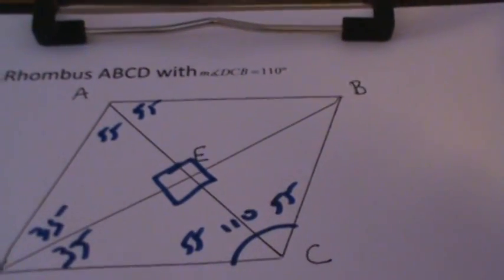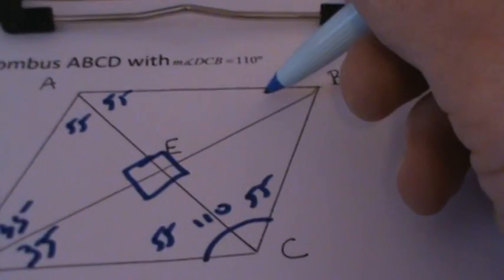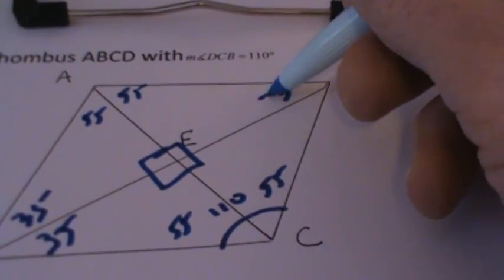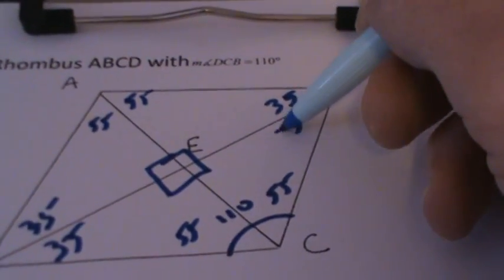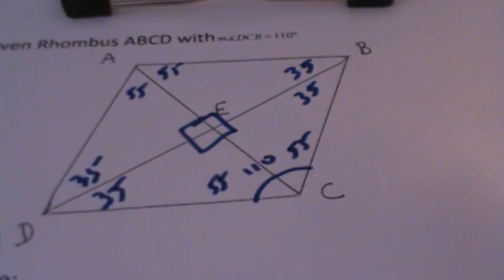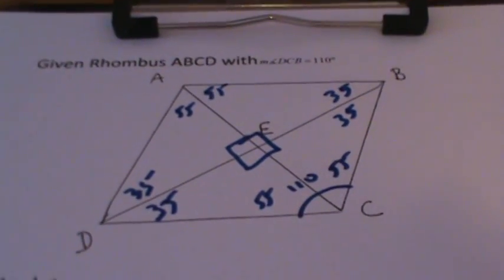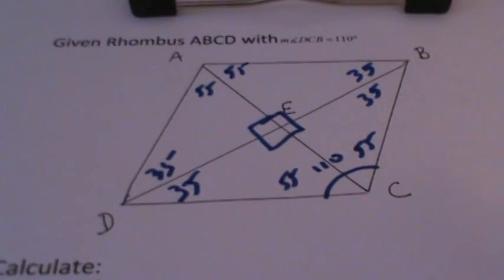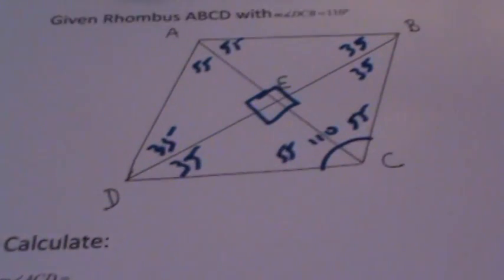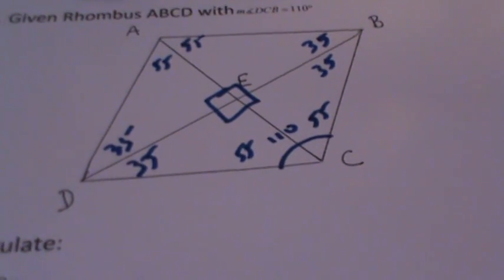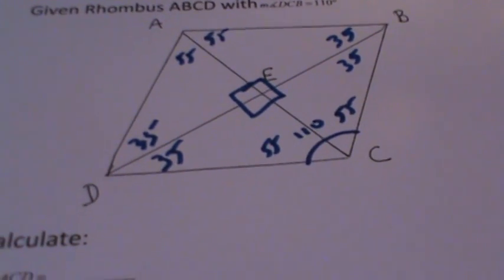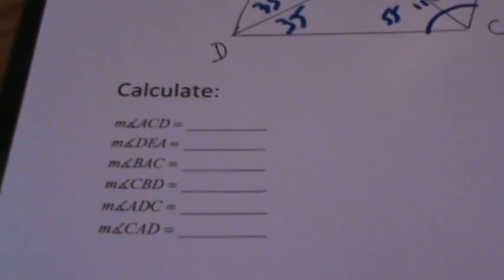As stated before, angles across from each other are congruent, making the remaining angles in that section 35 and 35 degrees. Now we have all the information we need. We fill in the angles inside the rhombus and then transfer that information over to answer the specific angle questions.